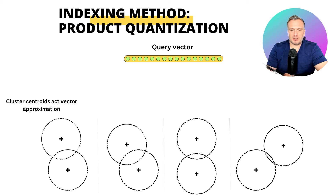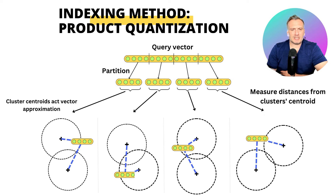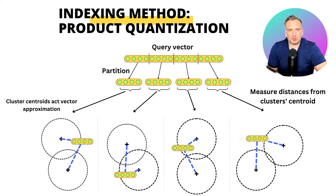When we have a new query vector, we can partition it and see to which cluster those subvectors belong to. When we want to retrieve nearest neighbors, we just need to return the subvectors that belong to those clusters. When looking for nearest neighbors, it is often not important to be perfectly accurate. Product quantization is a way to quantize the vector space to represent vectors with less precision.